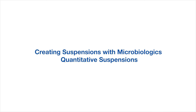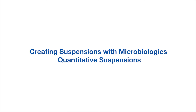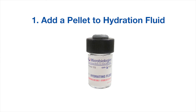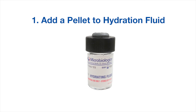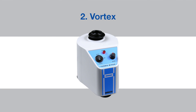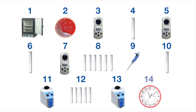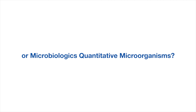Microbiologics makes creating microorganism suspensions simple. Here's an example: say you want to make a suspension that will deliver 10 to 100 CFU on a tryptic soy agar plate. There are only three easy steps. First, add a quantitative microorganism pellet to diluent — many of our kits come with diluent for rehydration of the lyophilized microorganism. Second, vortex the suspension. Third, plate 0.1 milliliters onto the agar. After incubation, you will see perfect results. So — manual methods or Microbiologics quantitative QC microorganisms?